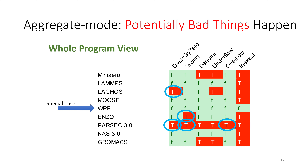What does the output look like? We take these applications, run them in aggregate mode, and see a table where red indicates an event occurred. Vertically we see different applications, horizontally different events such as divide by zero and invalid. The highlighted situations are potentially bad things we detect — you would not expect divide by zero in a scientific application, you would not expect invalid in something like Enzo, you would not expect overflow in most things. WRF is a special case worth noting.